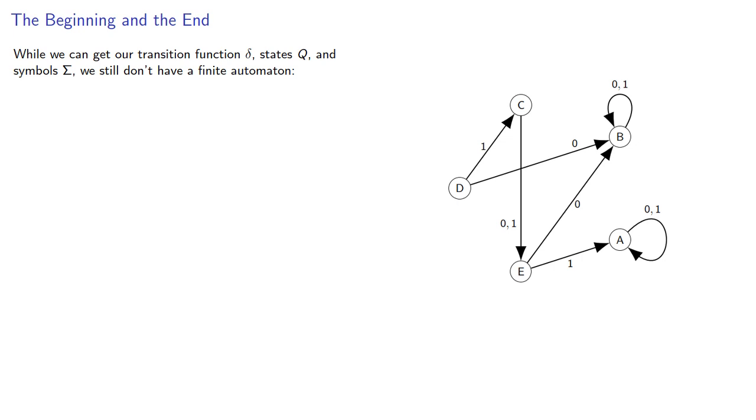While we can get our transition function delta, states Q, and symbols sigma, we still don't have a finite automaton. We need to select the initial state and the accepting states.